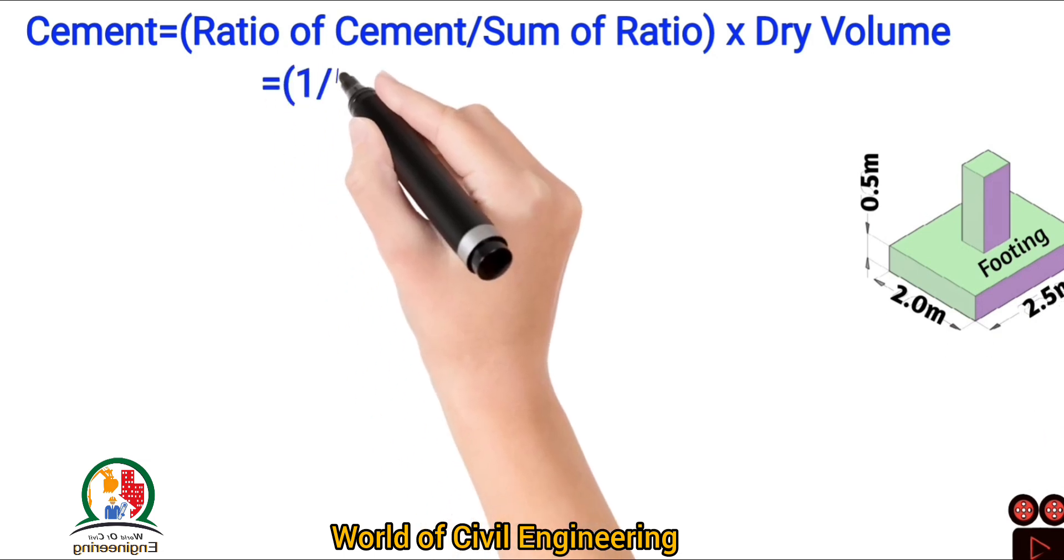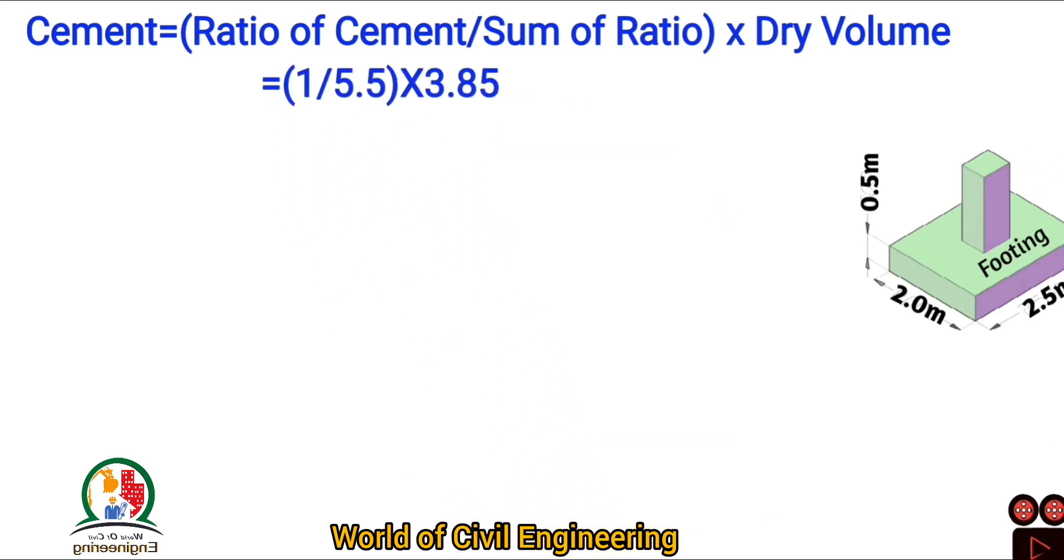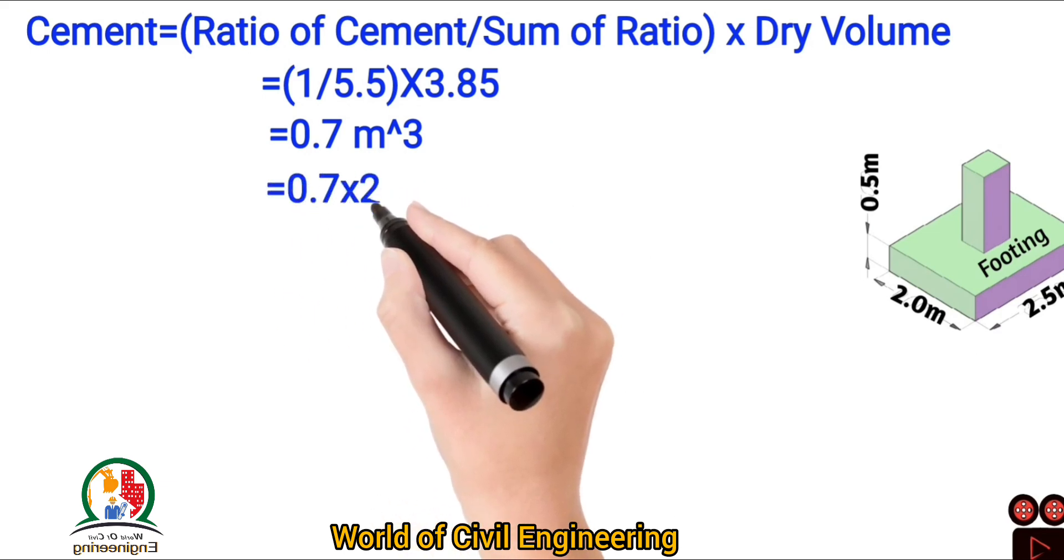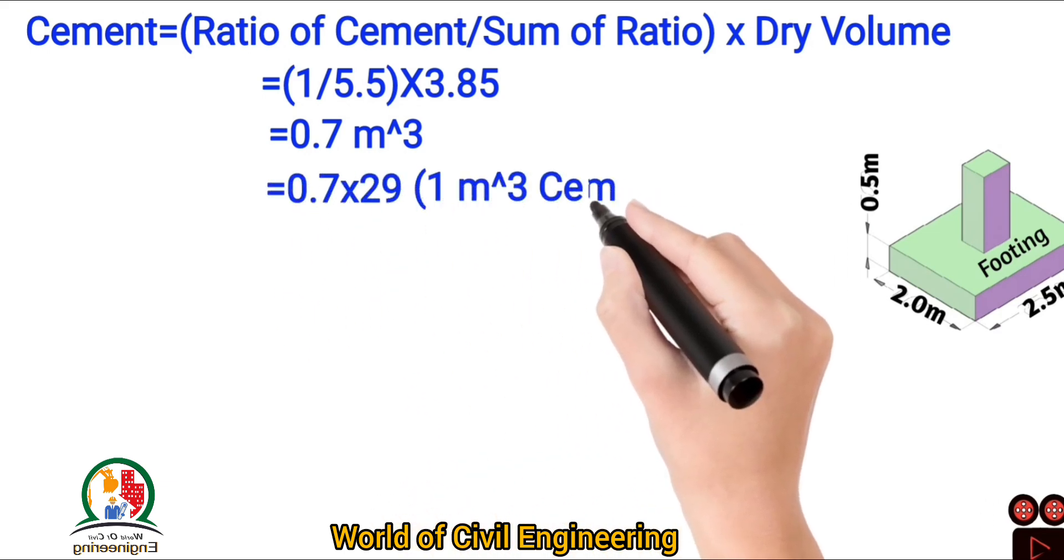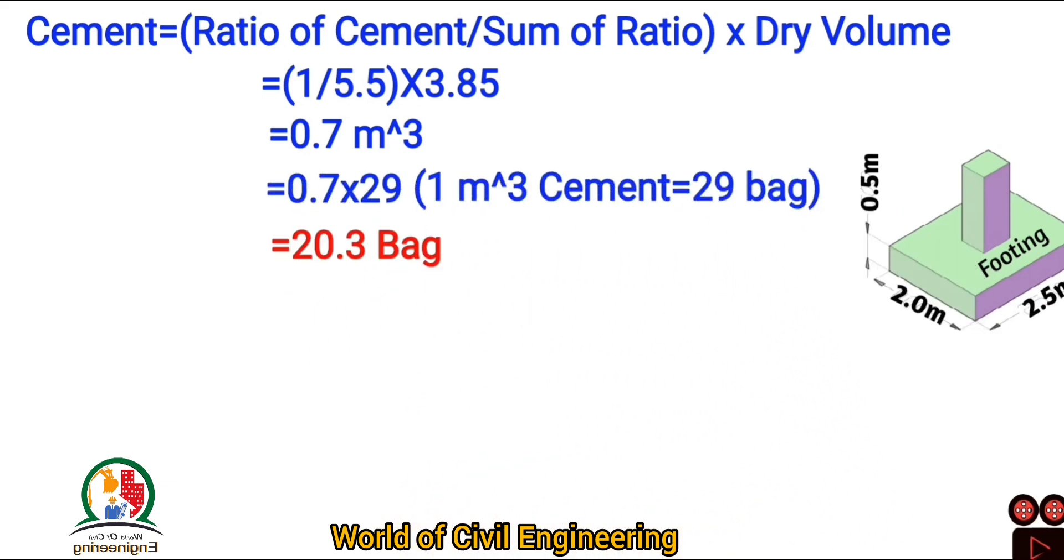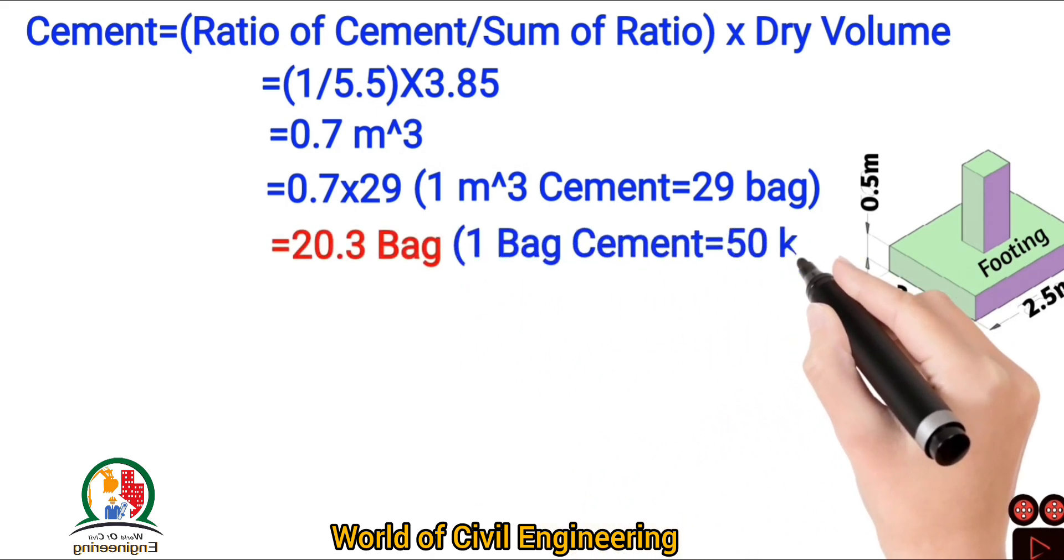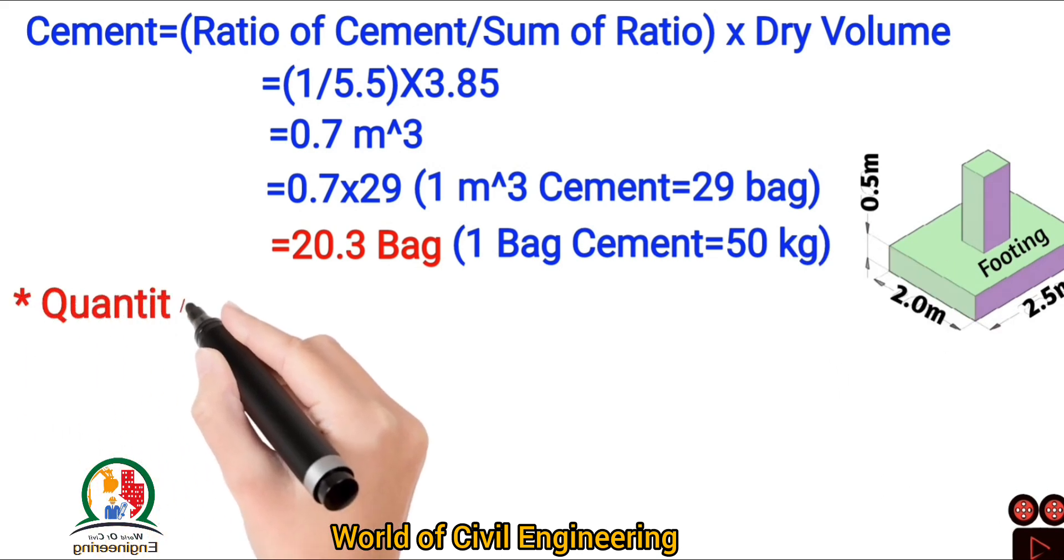Cement equal to 1.5 into 3.85 equal to 0.7 meter cube equal to 0.7 into 29 because 1 meter cube cement equal to 29 bag equal to 20.3 bag. 1 bag cement equal to 50 kg.